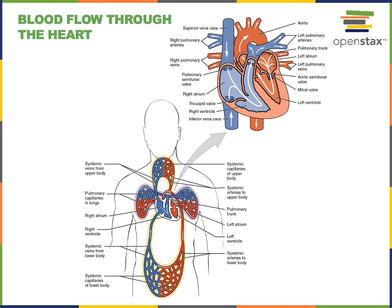The systemic circuit also includes the coronary circuit, which are the blood vessels carrying blood to and from the heart muscle. The coronary arteries carry blood from the aorta to capillaries in the myocardium. Then cardiac veins drain the blood from the capillaries of the myocardium. The great cardiac vein, middle cardiac vein, and lesser cardiac vein all join together into the coronary sinus.